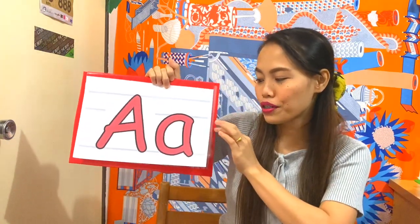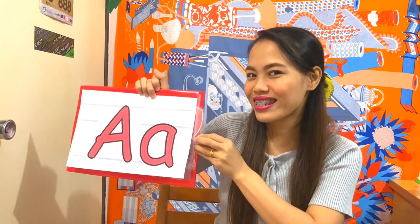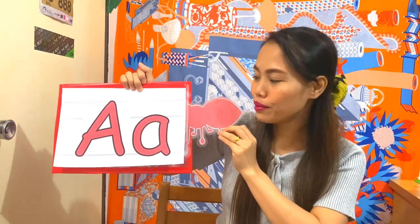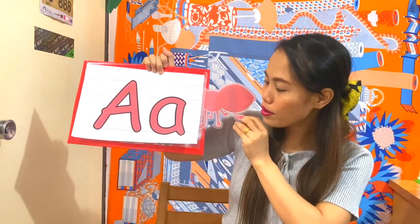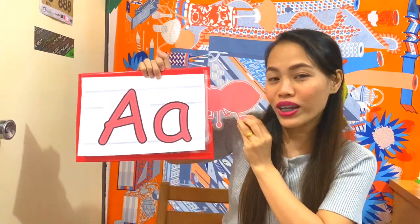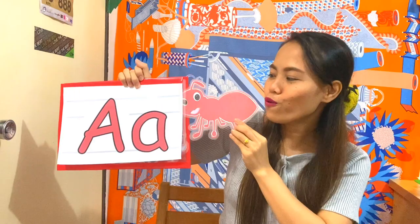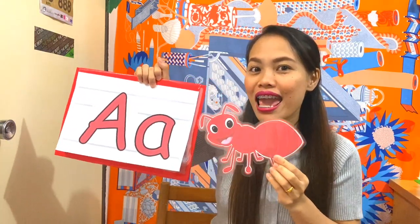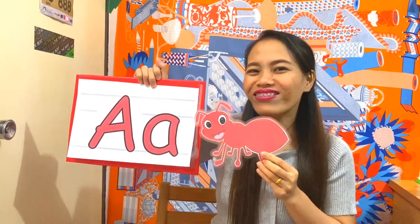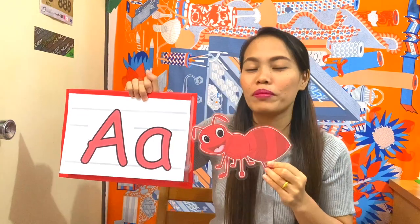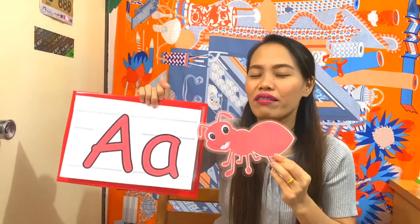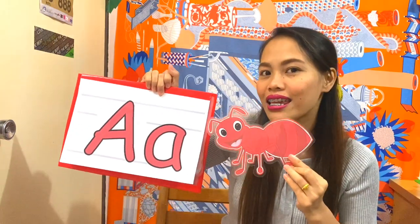All right! So next picture! Everybody look! Let's see — what's this? Wow, it's color red! There's a lot of feet! What is this? Start with letter A. Ant. Very good! It's an ant. Everybody say A. Ant. Good job! Everybody say A. Ant. Very good! Ant starts with letter A. Very good!